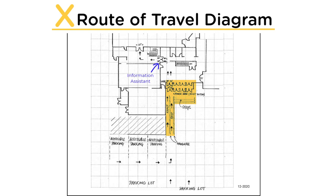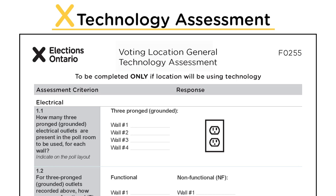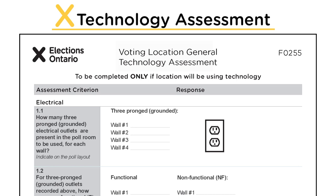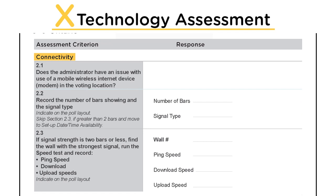Technology Assessment. All advanced polls are technology polls and will be equipped with e-poll books and tabulators. Polling day voting locations with 1,000 electors or more may utilize technology equipment. You will complete the General Technology Assessment section if technology process is checked in the Location Poll Type and Voting Process section. This assessment determines if the voting room can support technology and assists returning officers in reviewing and updating polling division boundaries. The general technology assessment is divided into three sections: Electrical, Connectivity, and Setup date and time availability.